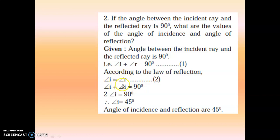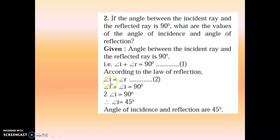We can replace R with I because both are equal. So I plus I gives us 2I equals 90 degrees. Since 2 is multiplying, when it goes to the other side it becomes division. So 90 divided by 2 equals 45. Therefore, the angle of incidence and angle of reflection are both 45 degrees. Together the angle is 90; since angle of incidence and angle of reflection are equal, we add them up and get the answer as 45 degrees.